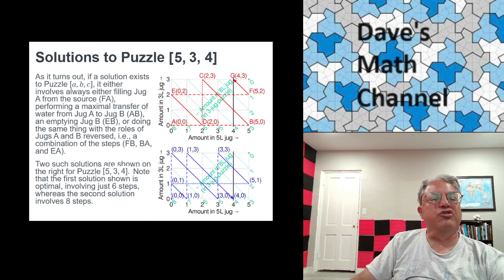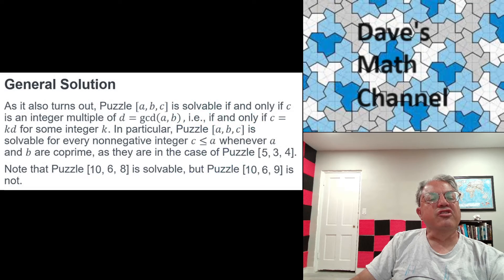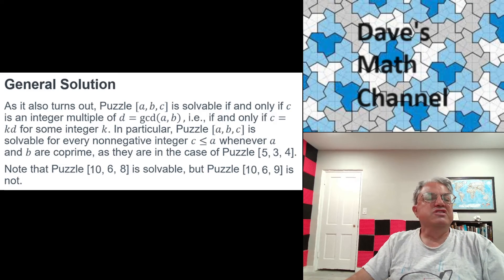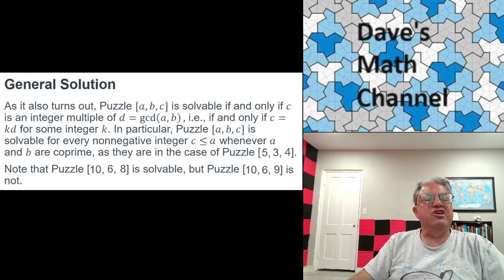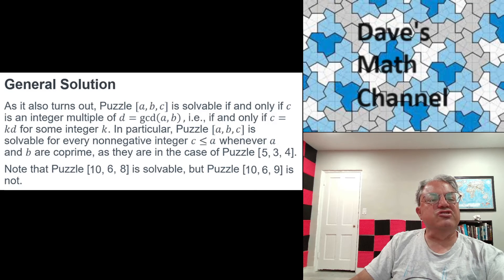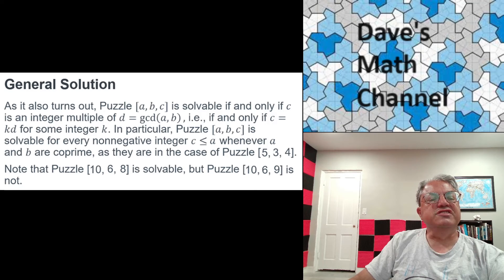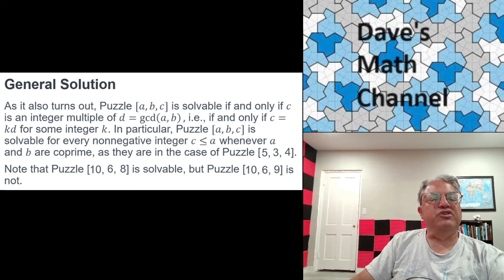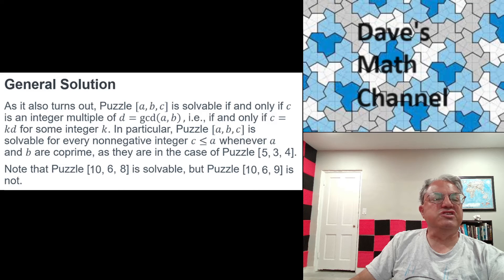And there's a general rule here. It turns out that puzzle [a,b,c], this is a fully general solution - I'm not going to prove this - but say you're given a puzzle [a,b,c] where a, b, and c are arbitrary positive integers with a greater than both b and c. So we're given jugs with capacities a and b liters where a is greater than b. We want to measure out exactly c liters in either jug. And it turns out you can do that whenever c is a multiple of the gcd of a and b. I'm not going to prove this, but that's true.